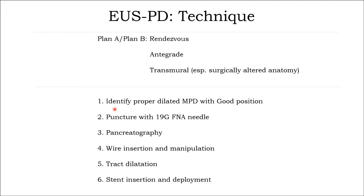Step 1: identify the properly dilated main pancreatic duct (MPD) with good transducer position. Step 2: puncture with a 19-gauge needle. Step 3: make a pancreatogram.